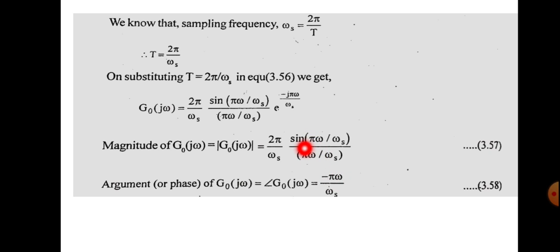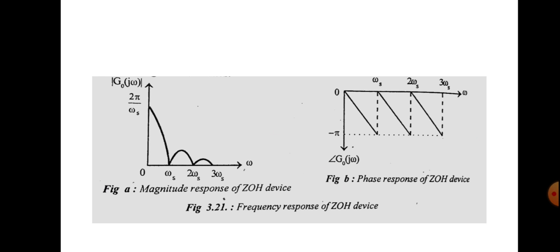By plotting magnitude versus ω and phase versus ω, you get the frequency response curves. This is the magnitude response and phase response for the zero order hold device. From the frequency response curve, we can conclude that the zero order hold device has a low pass filtering characteristic. It provides maximum gain for low frequency signals, but higher frequency signals are greatly attenuated.